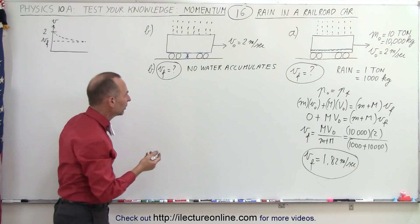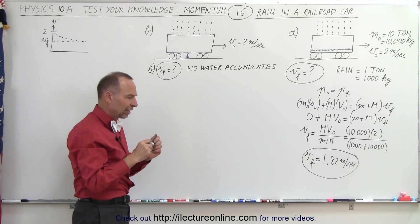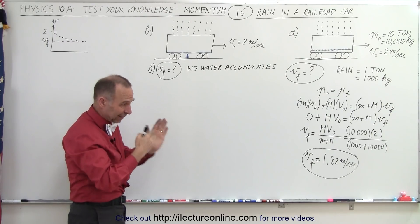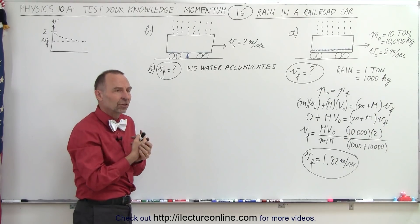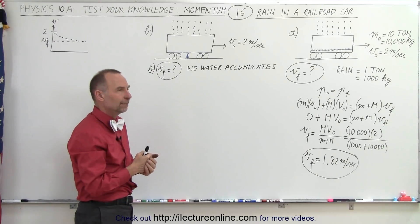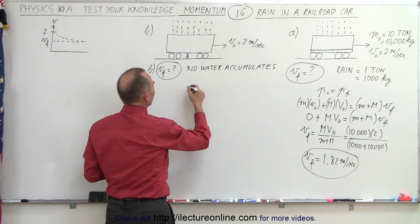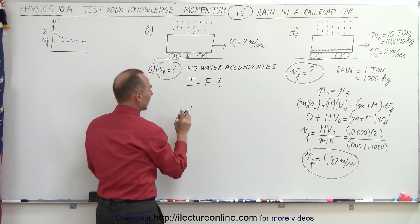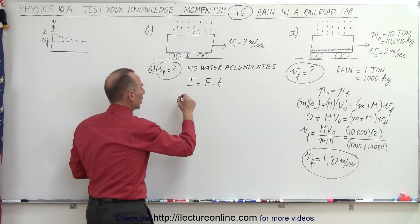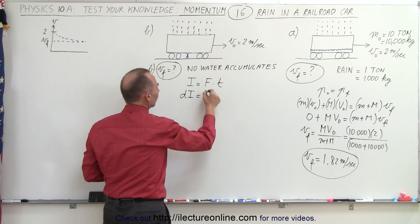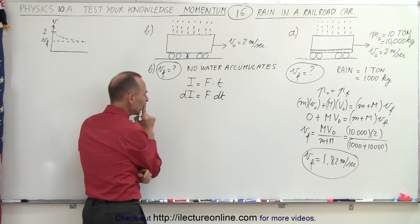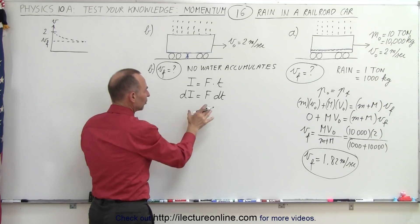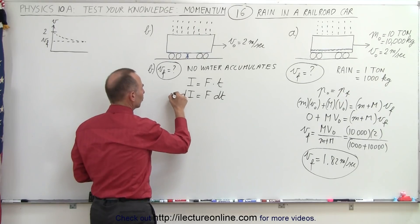The water gets accelerated to the velocity of the railroad car — similar to an impulse — and that acts in the opposite direction of the car's motion, slowing it down. We can say impulse equals force times time. A small amount of water entering the car causes a small impulse dI equal to force times dt. This impulse on the water acts in the negative direction of the car's motion, so we need a negative sign.